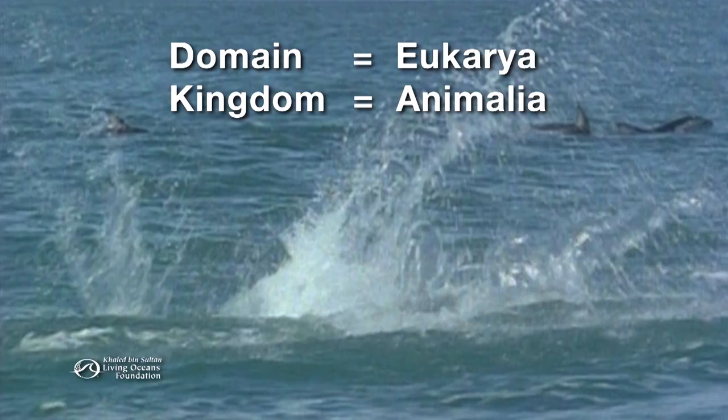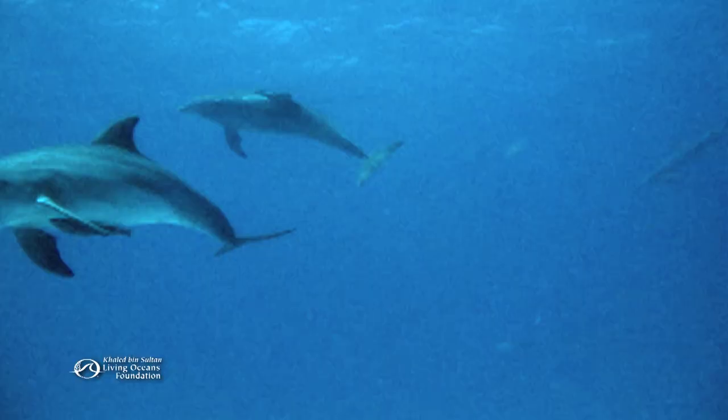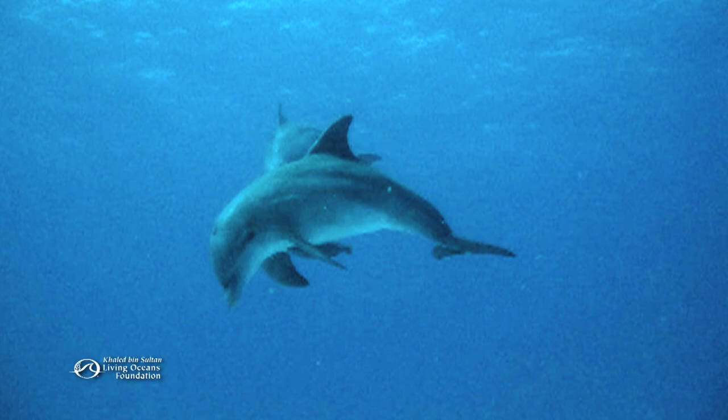Next comes phylum, the body type category. There are about 36 phyla. This animal is grouped with other animals that have backbones in the category called chordata.